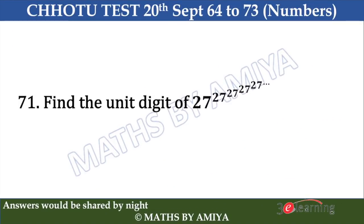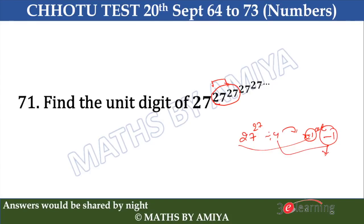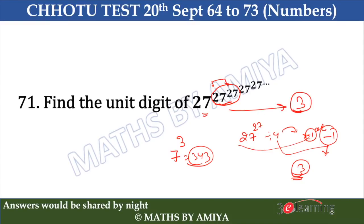Question 71 is the easiest one. We divide the first and second power by 4, getting remainder minus 1 raised to an odd power, which is minus 1. And 4 minus 1 is 3. So the first and second power give remainder 3. The bottom value is 7, and 7 cubed is 343. Our answer is 3.